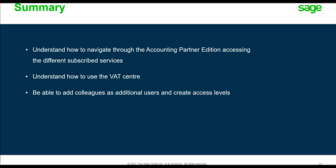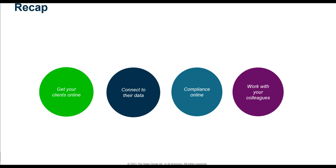To summarize what we covered today: you should be comfortable navigating through Accounting Partner Edition and accessing different subscribed services, you know how to use the VAT Center, and you can add colleagues as additional users and create access levels. To recap: you can get clients online with Accounting Start, Accounting, or Sage Business Cloud Payroll one at a time or in batches using the import tool; connect to their data in real time from anywhere; produce accounts and tax returns using Sage Funnel Accounts Online, Sage Corporation Tax Online, and Sage Personal Tax Online; and work with colleagues using multi-user capability and role-based access rights.